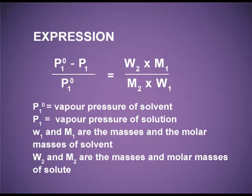Here P°₁ is the vapour pressure of pure component 1, where 1 is the solvent. P₁ is the partial vapour pressure. Component 2 is the solute. You can see from the formula that it is molality — W₂ × M₁ divided by M₂ × W₁. So more is the number of solute particles, more will be the lowering in vapour pressure. This property is very important to understand, because the rest of the colligative properties entirely depend upon this lowering in vapour pressure.